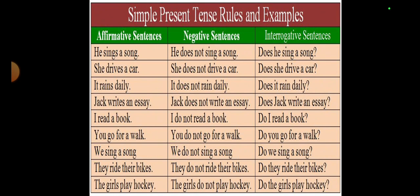Some examples for almost all subjects: 'He sings,' 'She dries,' 'It rains daily,' 'Jack writes,' 'I read' — note that 'I reads' would be wrong — 'You go,' 'We sing,' 'They write,' 'The girls play.' Remember that with plurals we do not use s or es, but with singulars we do. For negatives, with singulars use 'does not' — he doesn't, she doesn't, it doesn't, Jack doesn't. With plurals use 'do not.' Similarly, in interrogatives, 'does' comes first for singulars and 'do' for plurals. You can go through this slide to clear all doubts.